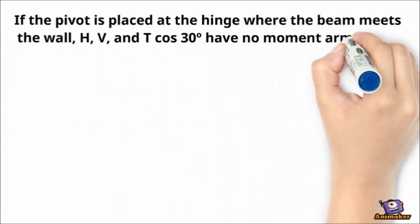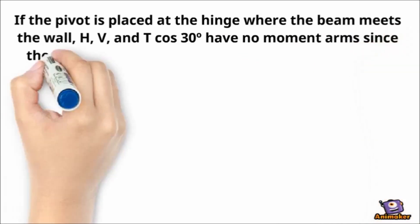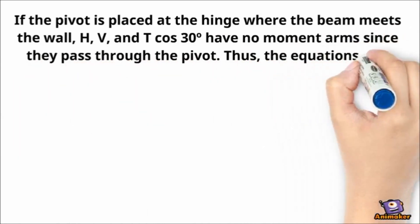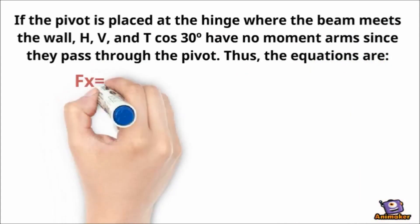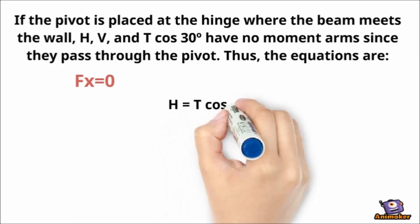H, V and T cosine 30 have no moment arms since they pass through the pivot. Thus, the equations are. To solve for tension we can use the summation of forces. Summation of Fx is equal zero. H is equal to T cosine 30.